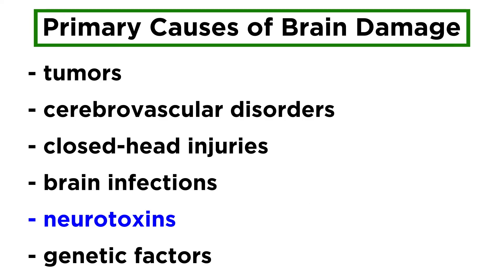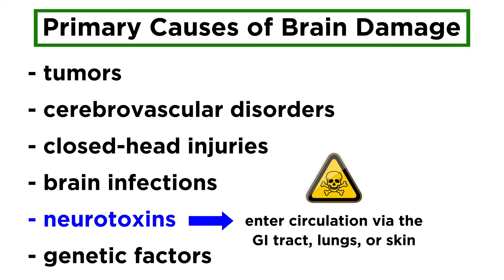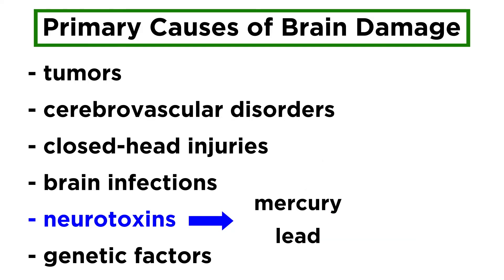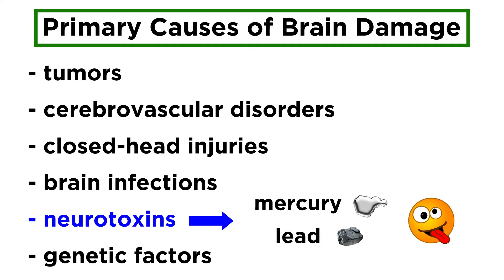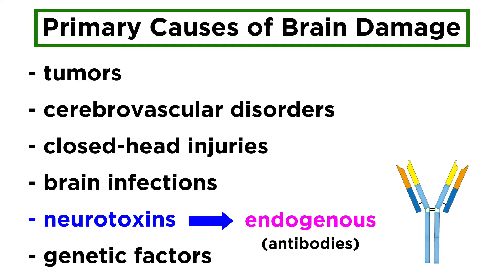Next, with neurotoxins, these are toxic substances that enter general circulation from the GI tract, lungs, or skin. These include mercury or lead, which can accumulate in the brain and cause significant damage, resulting in psychosis. There can even be endogenous neurotoxins, meaning they originate in the body, in the form of certain antibodies.